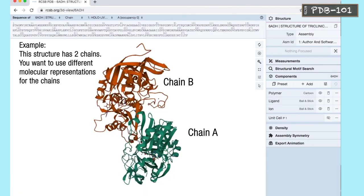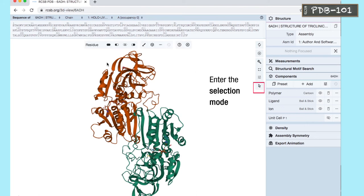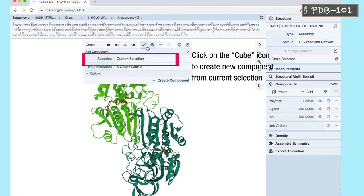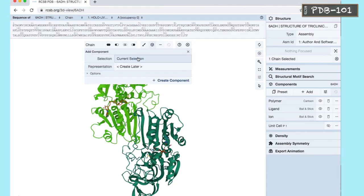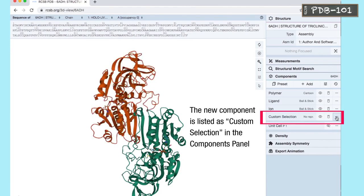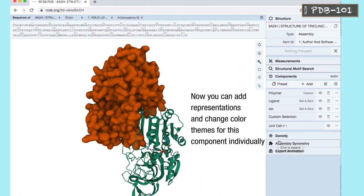This structure has two chains. You want to use different molecular representations for each of the chains. Enter the selection mode. Change the selection range to chain. In the viewport, select the polymer chain. Click on the cube icon to create a new component from the current selection. Click on create component. Exit the selection mode. The new component is listed as custom selection in the components panel. Now, you can add representations and change color themes for this component individually.